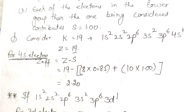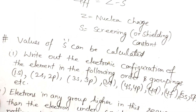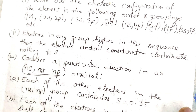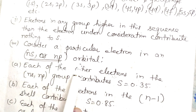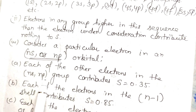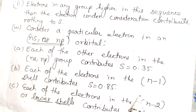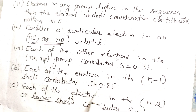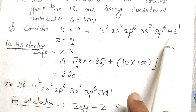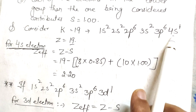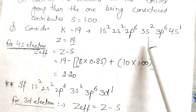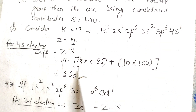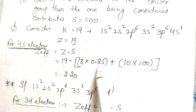For the 4S electron, N = 4, so N-1 = 3. The total number of electrons in the N-1 shell (3S and 3P) is 2 + 6 = 8. Each of these contributes S = 0.85, so the contribution from the N-1 shell is 8 × 0.85.